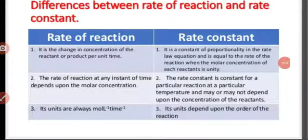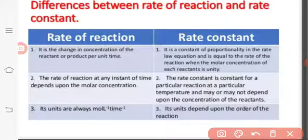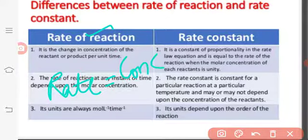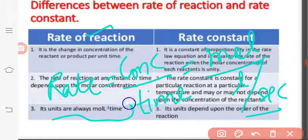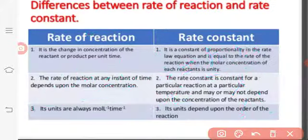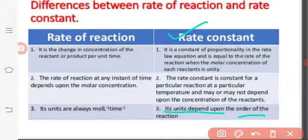What are the units of rate constant? The unit of rate of reaction is concentration divided by time — moles per liter per second, or moles per liter per time. The unit of rate constant depends only on the order of reaction — whether the order is zero, one, or two determines the unit of k.